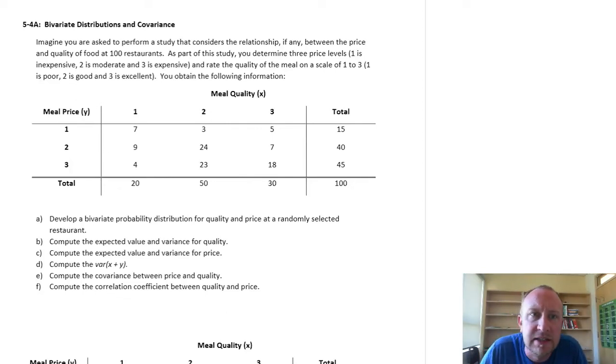Hello and welcome back. In this exercise we're going to be looking at bivariate distributions and covariance, also coefficient of correlation. So basically here we're looking at a probability distribution that arises when we consider two random variables simultaneously. In this case we're looking at two discrete distributions, one on meal price and one on meal quality.